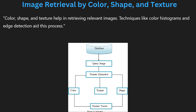Images can be retrieved from multimedia databases based on specific visual characteristics like color, shape and texture. Color retrieval uses histograms to match color patterns between images. Shape-based retrieval focuses on identifying objects by comparing their outlines or edges. Texture-based retrieval looks for patterns within an image such as smoothness or roughness. Combining these attributes makes the retrieval process more accurate and relevant. These techniques are especially useful in fields like fashion, design and content creation where visual data is crucial.